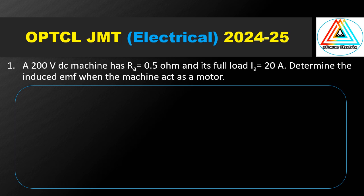Question number 1. A 200-volt DC machine has armature resistance Ra equal to 0.5 ohm and its full load armature current IA equal to 20 ampere. Determine the induced EMF when the machine acts as a motor.